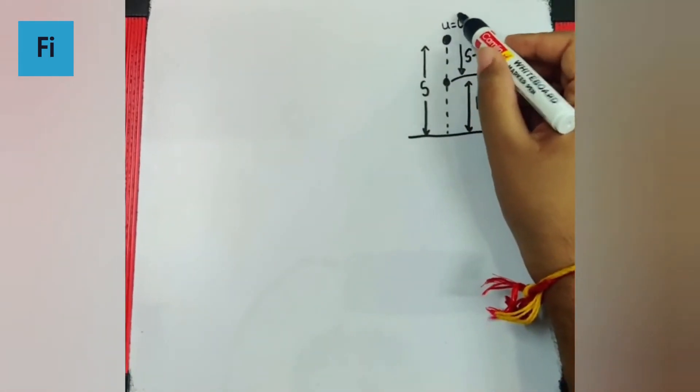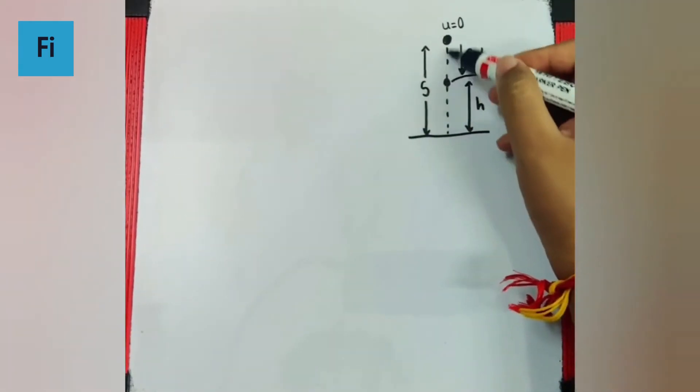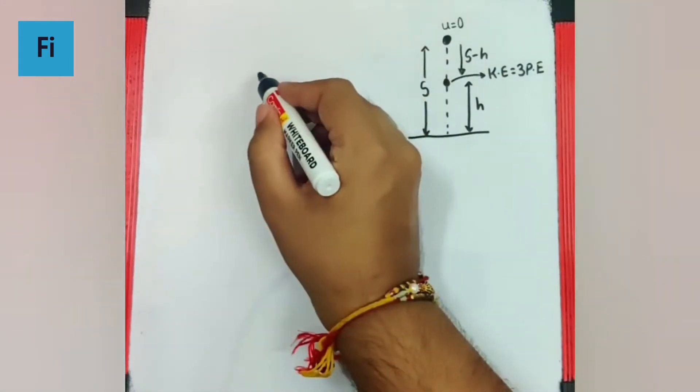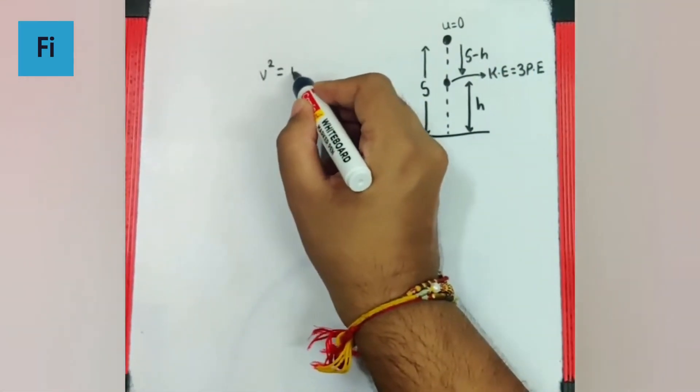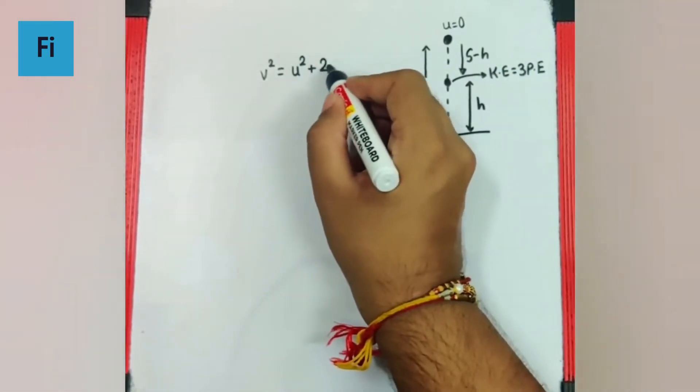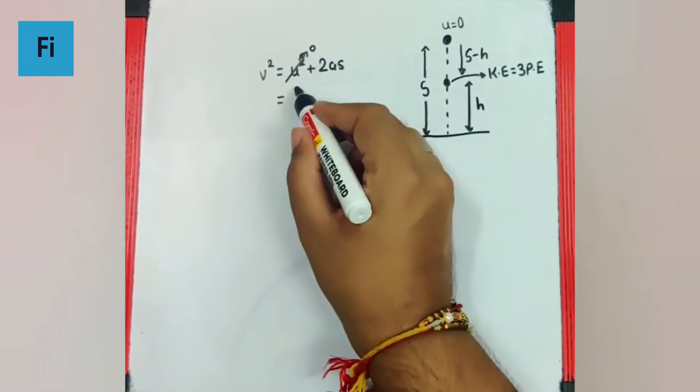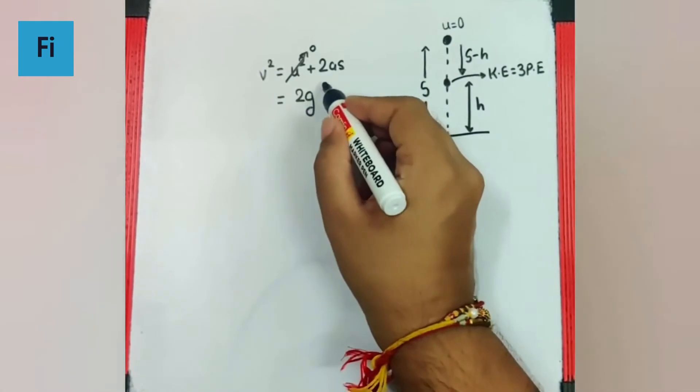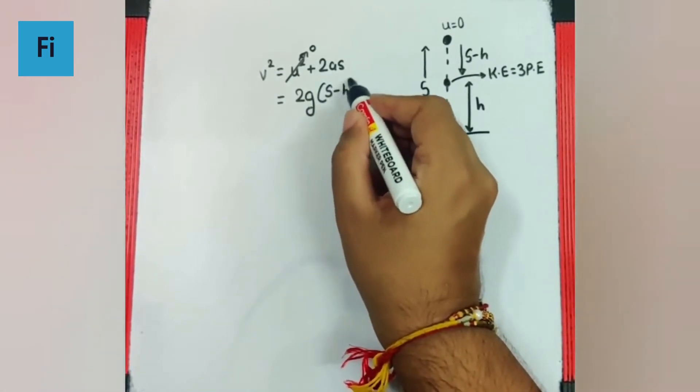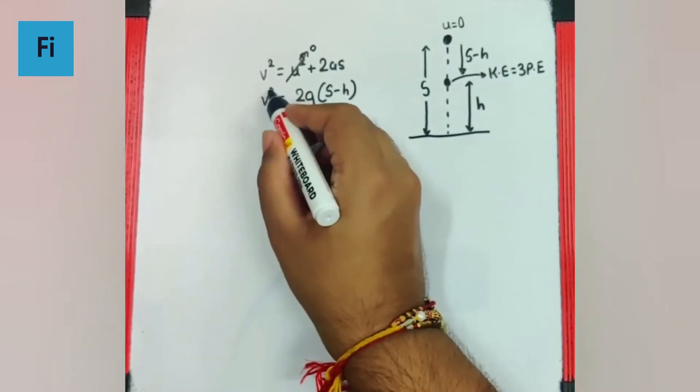So obviously here u is zero. So if I apply kinematical equation for this part, I can say v square is equal to u square plus 2as, but definitely u is zero. So this is going to be 2g bracket s minus h as v square.